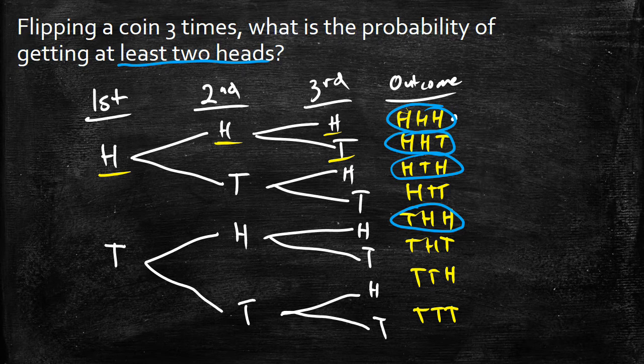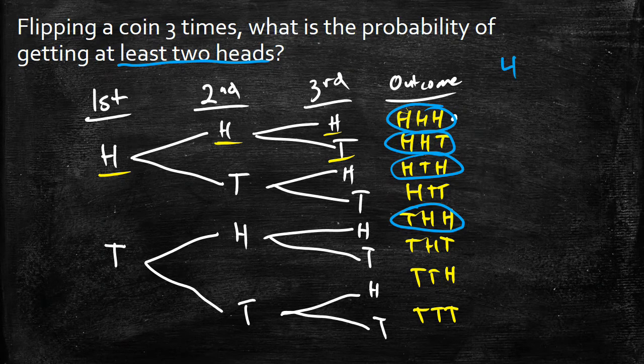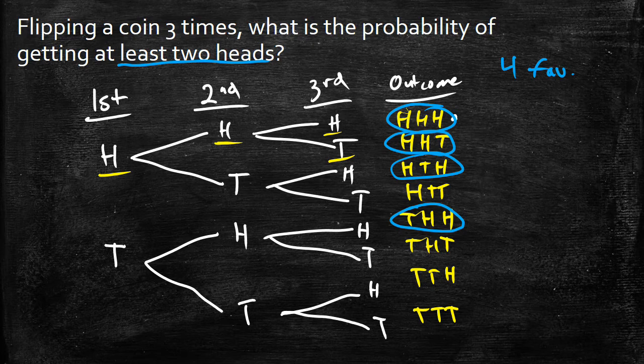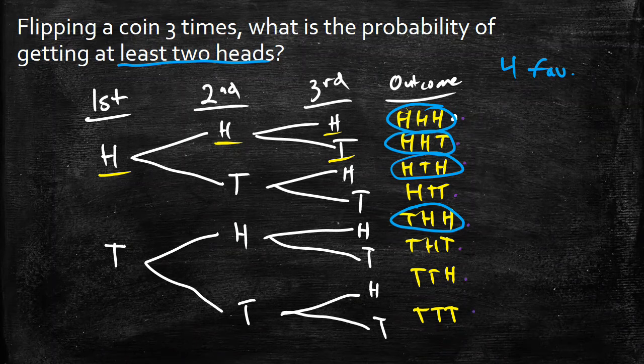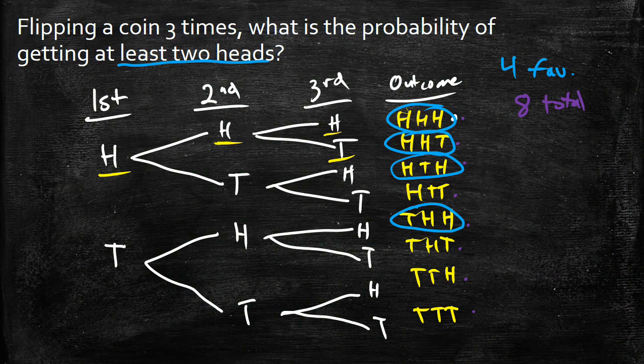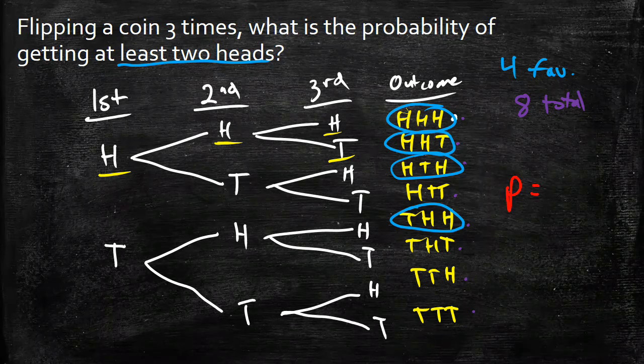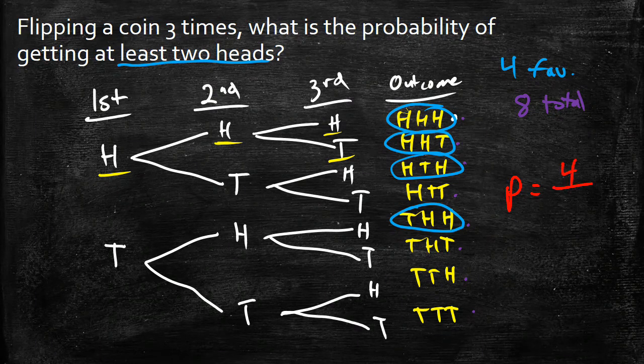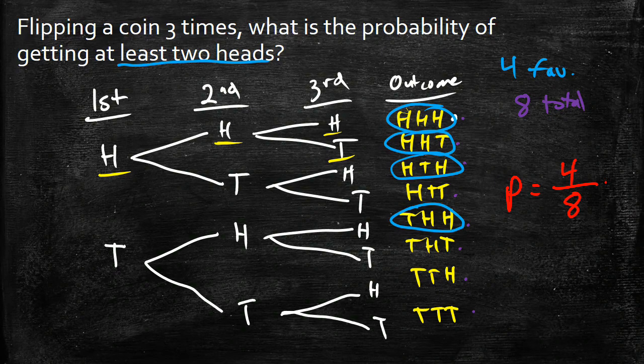Four favorable outcomes. And out of our total number of outcomes, we have one, two, three, four, five, six, seven, eight possible outcomes. If we remember from before, the way that we find our probability is by going our probability is equal to our favorable outcomes, which is four, over our total outcomes, which is eight. And we know if we simplify this down, this will become one half. We can also turn this into a decimal, which is 0.5 or a percent, which is 50%.